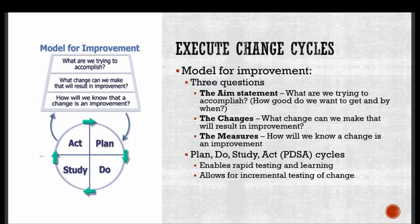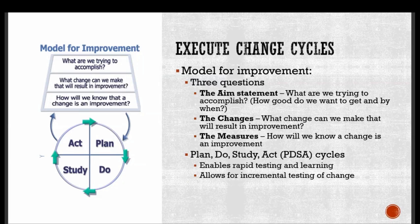How do we execute the Model for Improvement? There are three questions. First, what are we trying to accomplish? We establish this with an AIM statement — how good do we want to get and by when. Second, what change can we make that will result in improvement? Third, how will we know a change is an improvement — what are we going to measure? Once those three questions are answered, you move on to Plan-Do-Study-Act cycles, or PDSA cycles, which enable a rapid testing and learning process and allow for incremental testing of change.